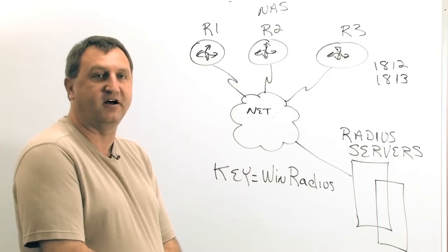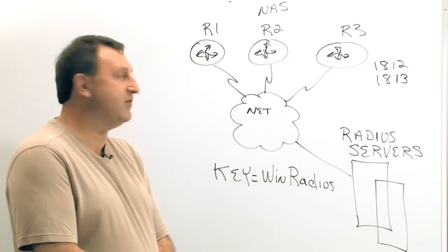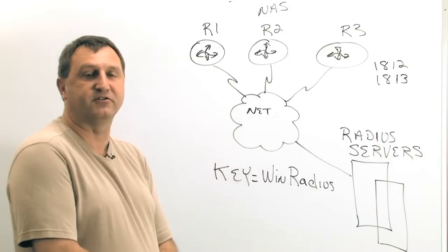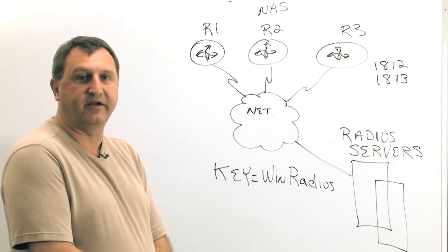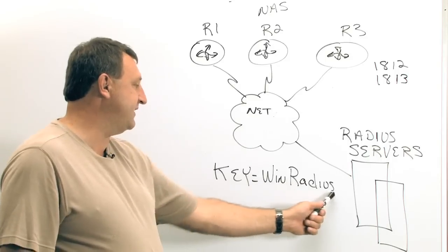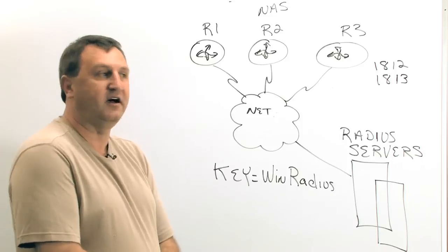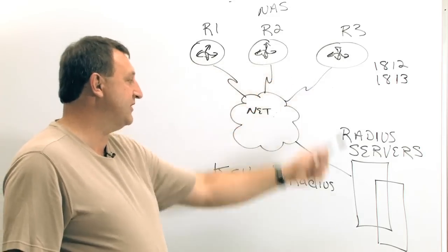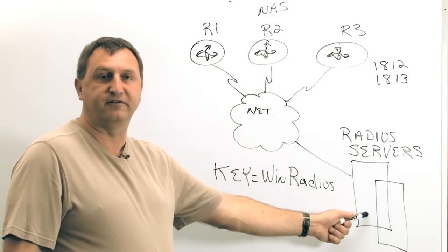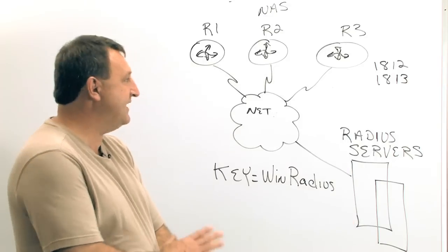They are going to be authenticated themselves. They're going to make sure that they are legitimate routers within our network so no one could test our authentication database. In this case it's like a password, so we're going to call this a key—it's WinRadius—and we have to put that on each of our routers and configure that on our server itself.